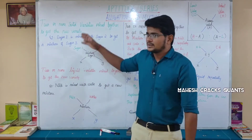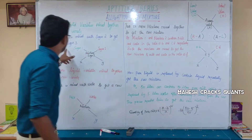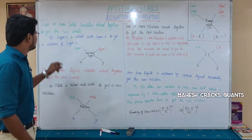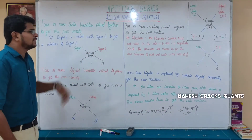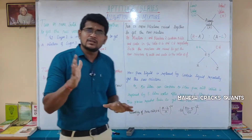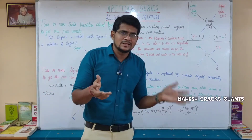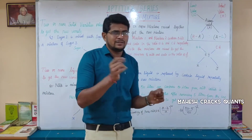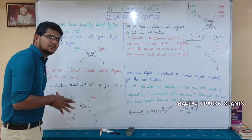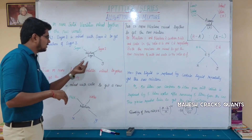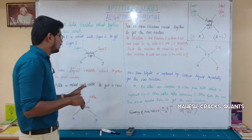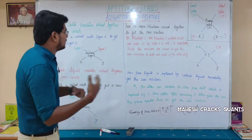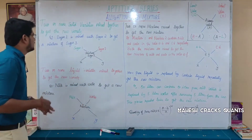Now, if you look at Sugar 1, the price is 30. Sugar 2 is 50. Sugar 3 is the mixture. We will get a price between 30 and 50. So, we will mix them at a price in between 30 and 50. This is the solid mix type.